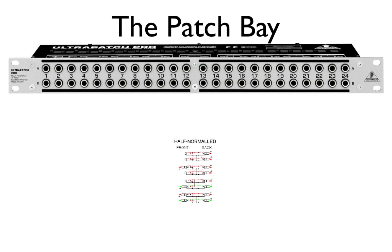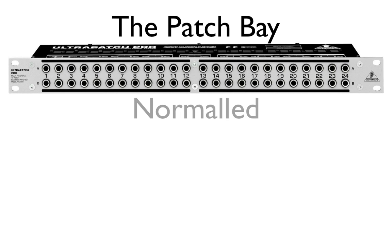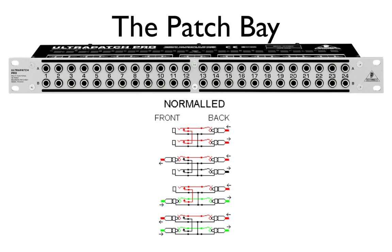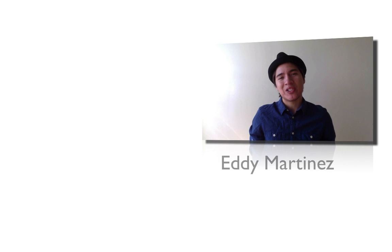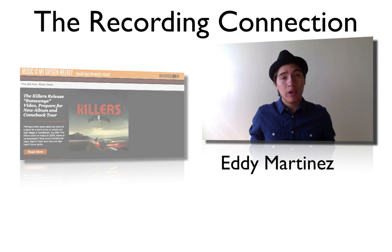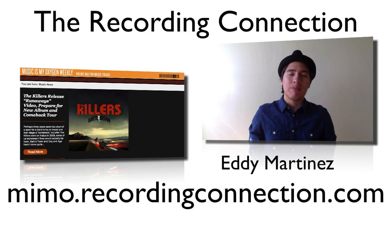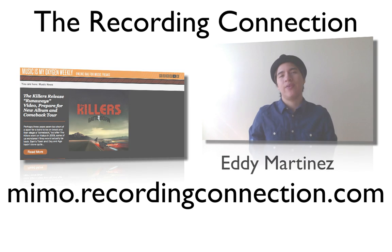So the last configuration type we'll talk about is normaled. Here's a diagram, and in contrast to a half-normal setup, the signal rail of the rear jacks is actually interrupted when you insert a plug both into the upper and lower front jacks. And those were the most common ways to configure a patch bay. Okay guys, that's all the video I have for you today. This has been Eddie Martinez with Recording Connection. Don't forget to check out Music is My Oxygen for all the things that you love about music, and I'll catch you guys on the next video.